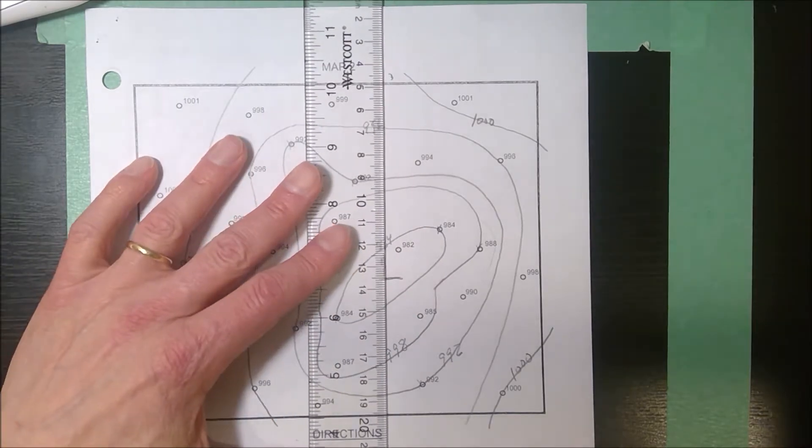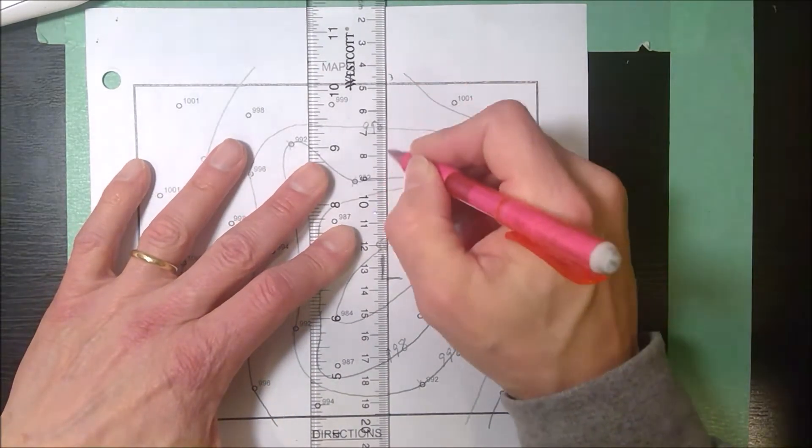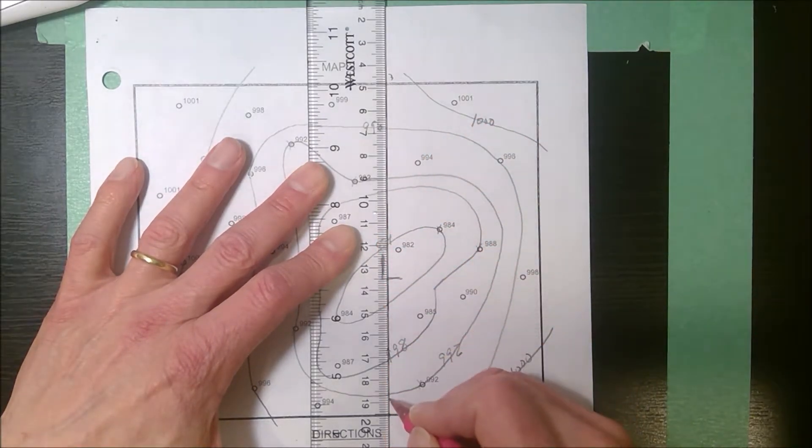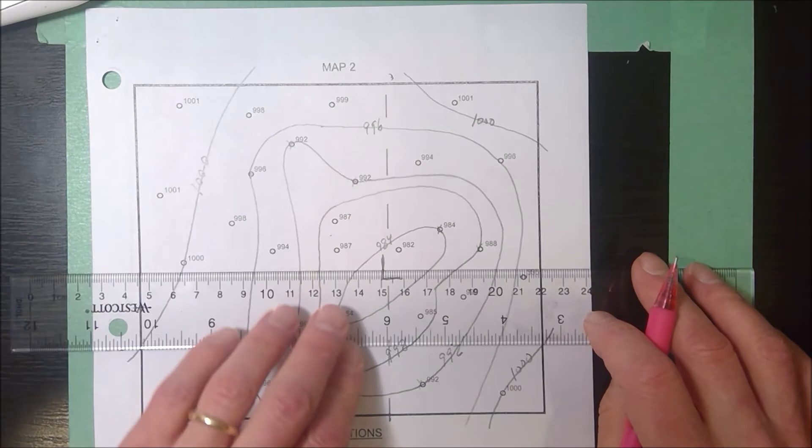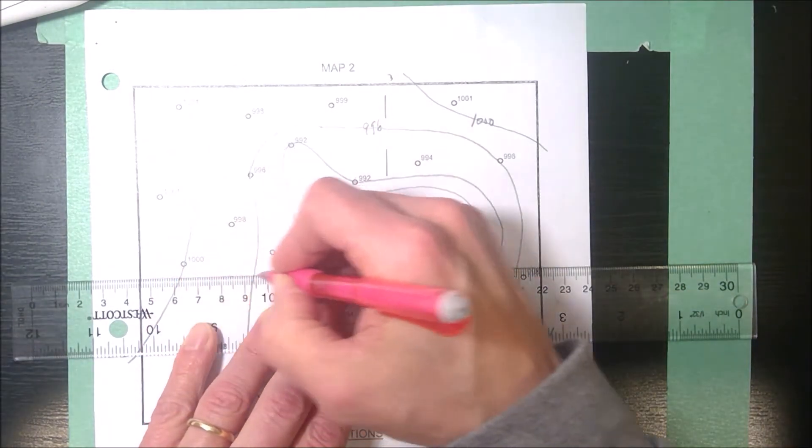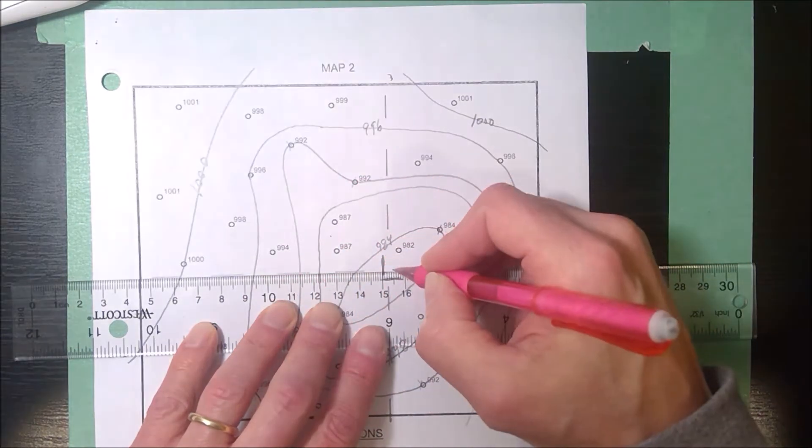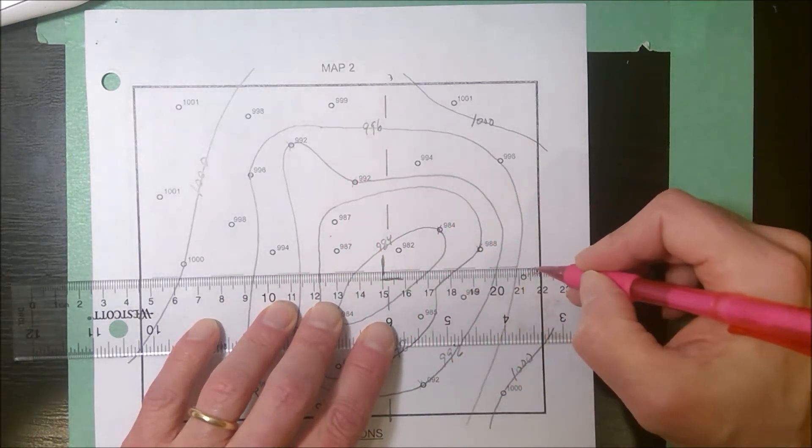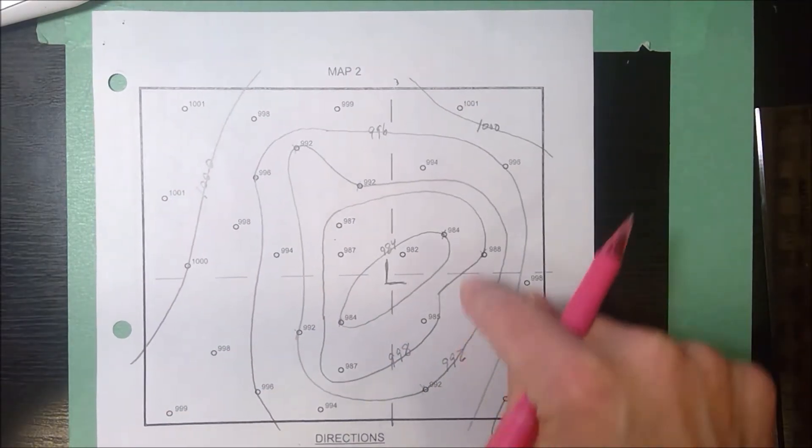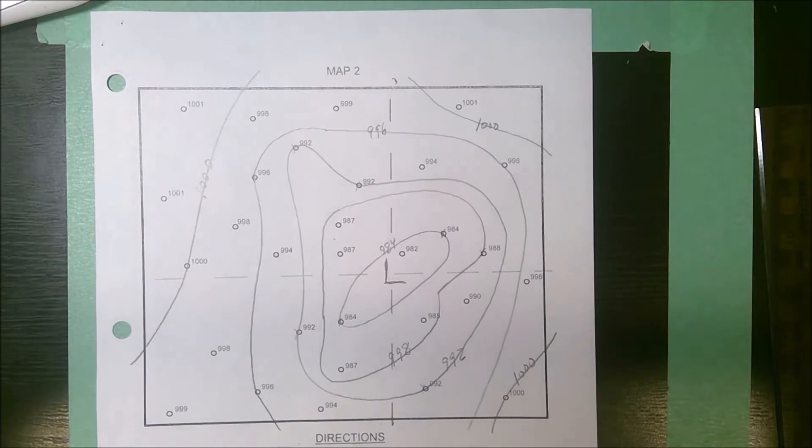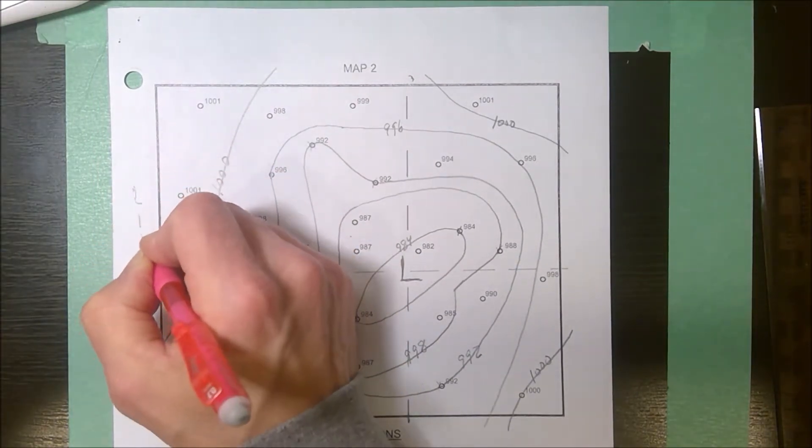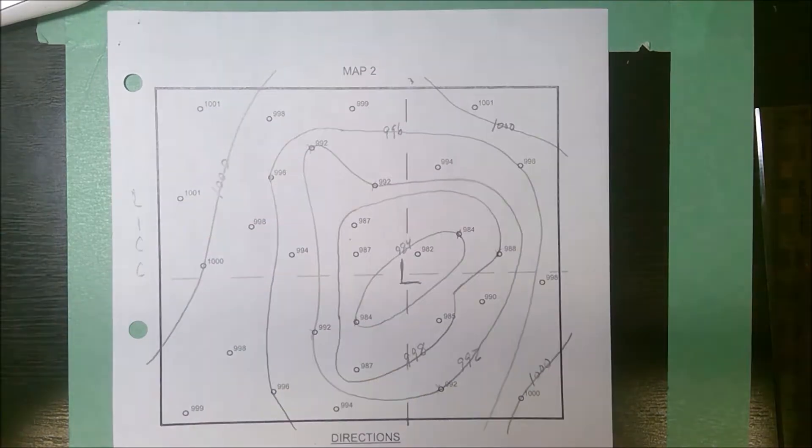You don't have to draw these, but I think this makes it easier for you to visualize. So I'm going to just draw a dash coordinate system through the center of my low. We're going to pick four station models and think about the direction that the winds should be blowing at one station in each quadrant. The mnemonic for low is lick. Low is in and counterclockwise.